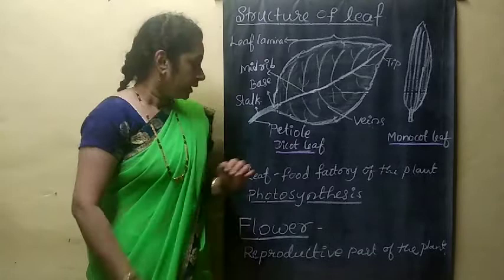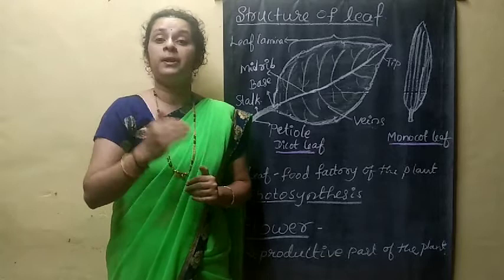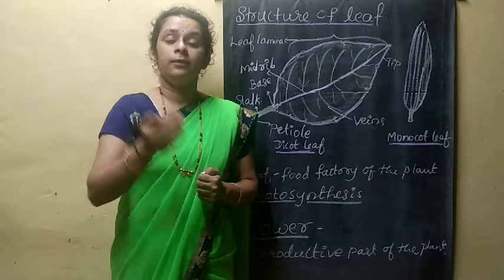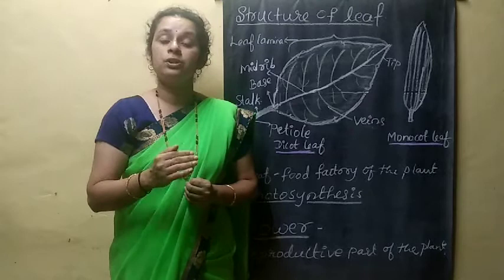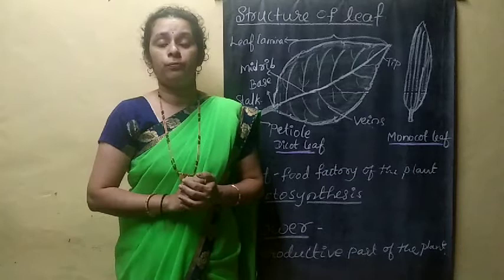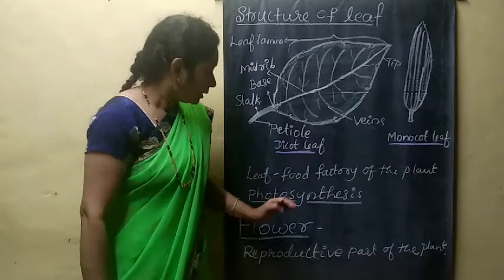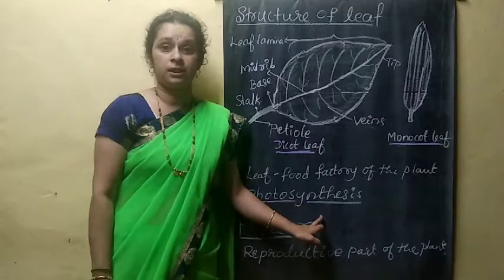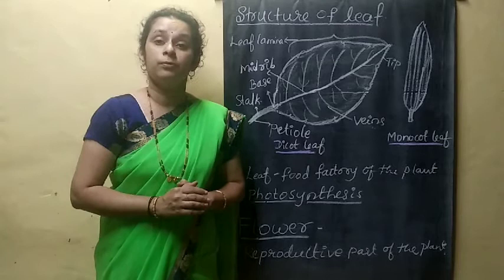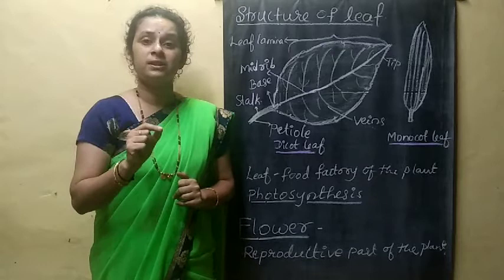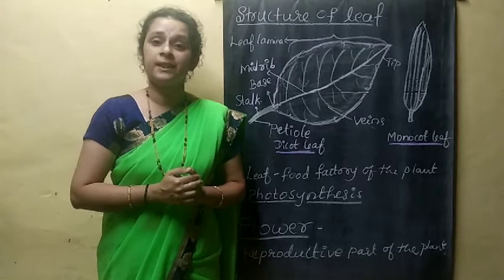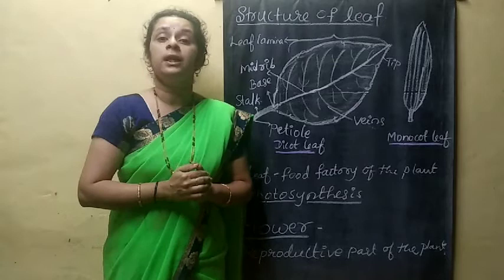The leaf is considered the food factory of the plant, because food preparation takes place in the leaf. Leaves prepare their own food by using carbon dioxide and water in the presence of sunlight and chlorophyll. Water and oxygen are also released in this process, and that oxygen is used for respiration. This process of food preparation in the leaf is called photosynthesis. Another important process in the leaf is transpiration — where water comes out from the leaf in the form of vapor.